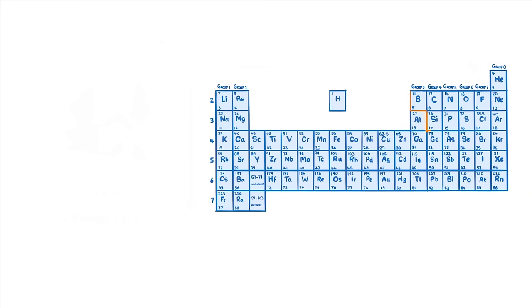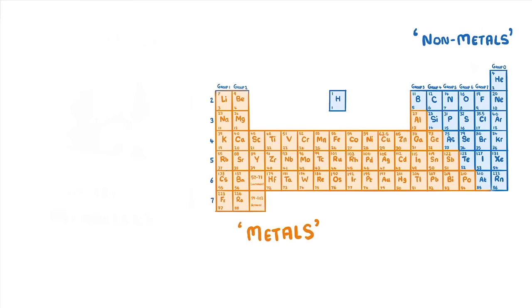Sometimes you might see a zigzag line running here, from aluminum to polonium. This line separates the metals, which include everything to the left in orange, from the non-metals on the right, still in blue. So, as you can see, there are lots more metals than there are non-metals.